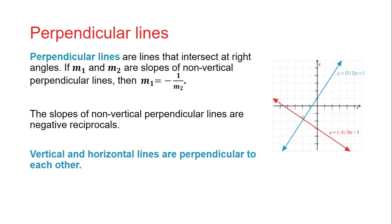Perpendicular lines are lines that intersect at right angles. If m₁ and m₂ are slopes of non-vertical perpendicular lines, then m₁ equals the opposite of 1 divided by m₂. The slopes of non-vertical perpendicular lines are negative reciprocals of one another. Another way to say this is that m₁ times m₂ equals negative 1. Vertical and horizontal lines are also perpendicular to each other.